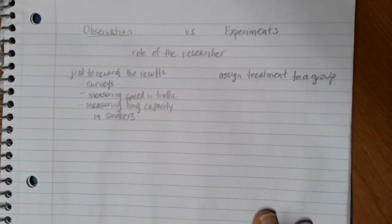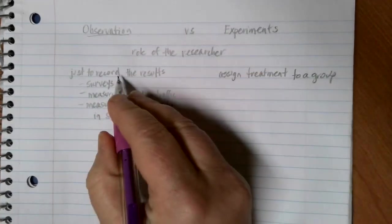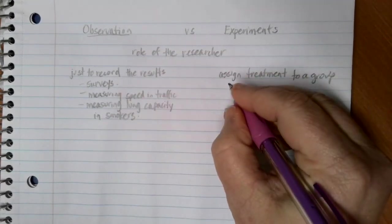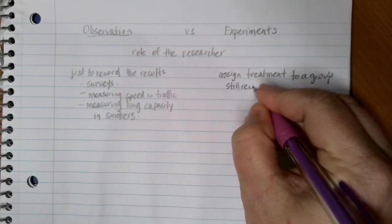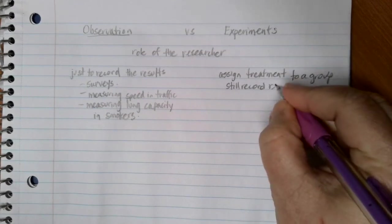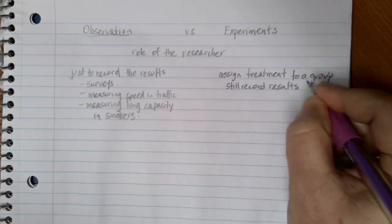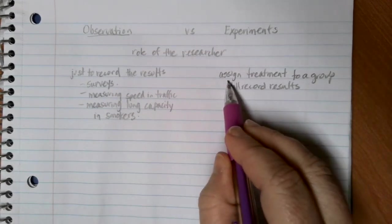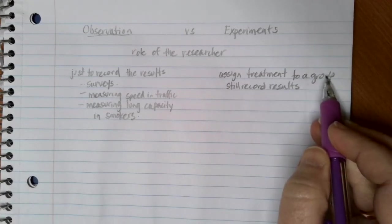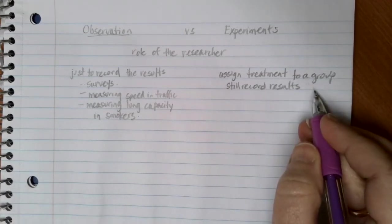In our experiments, we're always recording the results just like what we do with an observation. We still record the results. But the difference is that we've assigned a treatment to a group and then measure what those results or changes are.